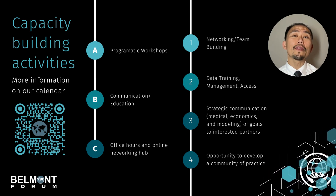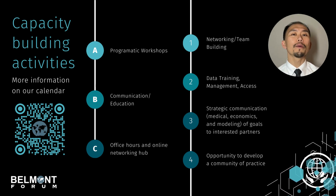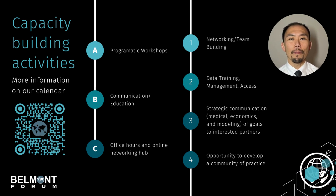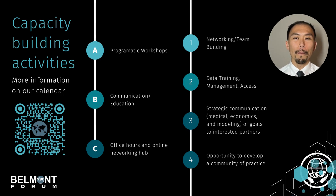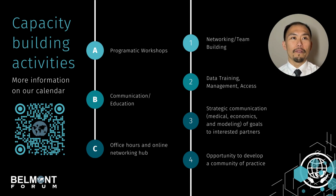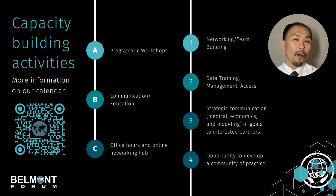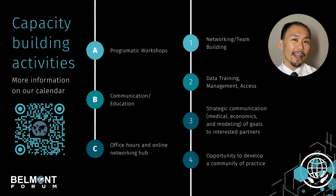I do want to emphasize: these capacity-building activities are completely voluntary and will not impact your proposal at all. However, if you would like to strengthen your proposal, you are welcome to attend. They can be found on the Belmont Forum website calendar by scanning the QR code or by going to www.belmontforum.org. There are three main types of events: programmatic, communication or educational, or office hours and networking. The full list of activities is on the website.